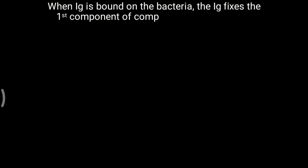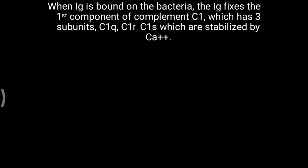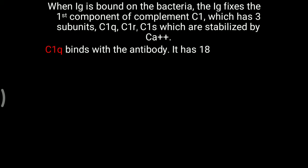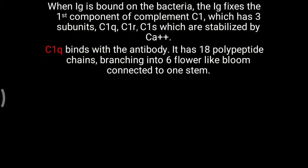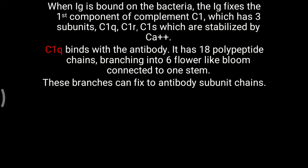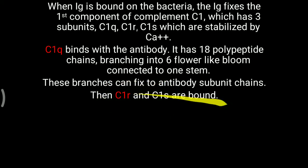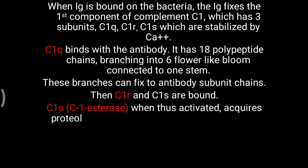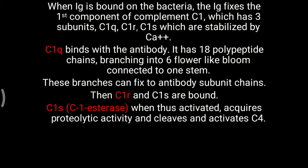When immunoglobulin or antibody is bound on a bacterium or antigen, the immunoglobulin fixes the first component of complement, C1. C1 has three subunits: C1Q, C1R, and C1S, which are stabilized by calcium. C1Q binds with the antibody — it has 18 polypeptide chains, branching into six flower-like blooms connected to one stem. These branches fix to antibody subunit chains. C1R and C1S are also bound with this chain.